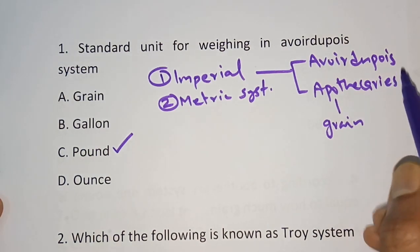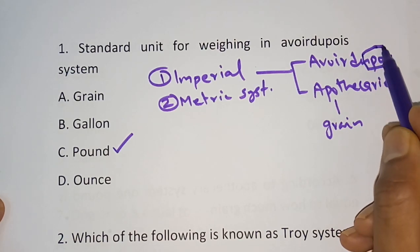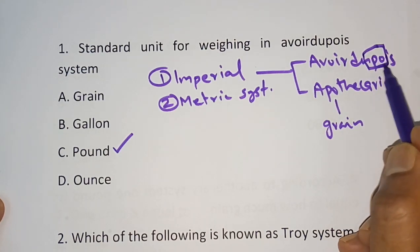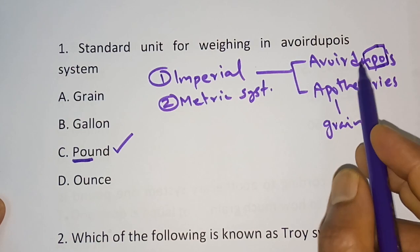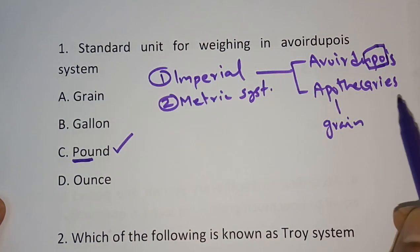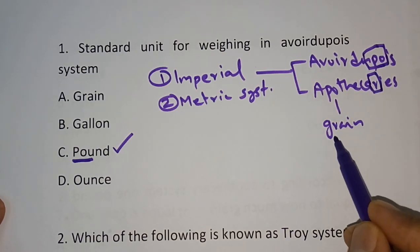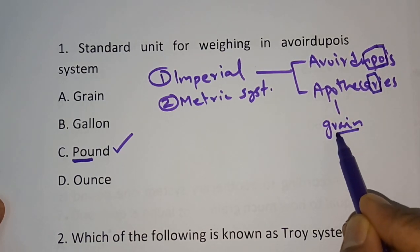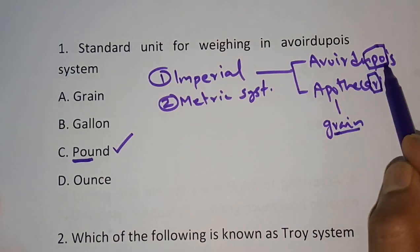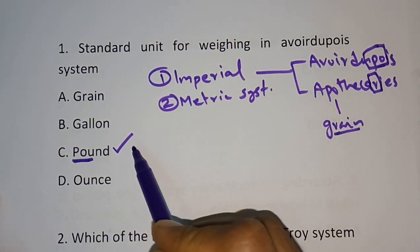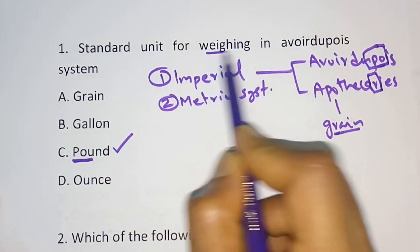To avoid confusion, you can look at the word 'avoirdupois' — you can see 'PO' in it, which stands for pound. So in the avoirdupois system the standard unit is pound. In case of the apothecary system, you can see the letter 'R' in it — that's the grain. So in the avoirdupois system pound is the standard unit, and in the apothecary system grain is the standard unit for weighing.